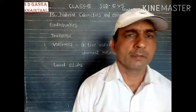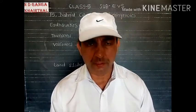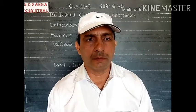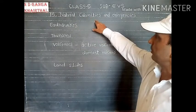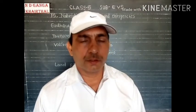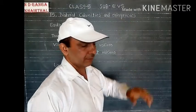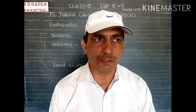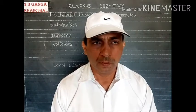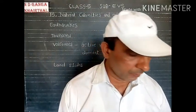Jai Hind. The subject is EVS, Class 5th, and we are starting Chapter number 15. The name of the chapter is Natural Calamities and Emergencies. The big word is 'Calamities' — it means natural calamities, or in Hindi, Prakritik Aapdaen. So let's start without wasting time.